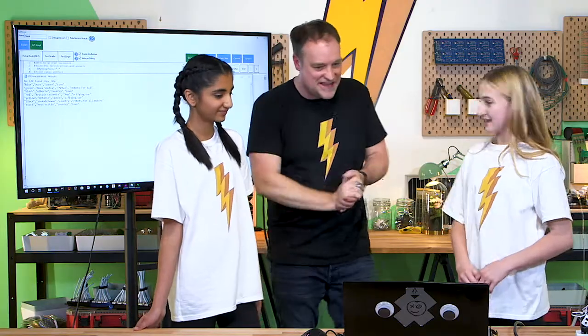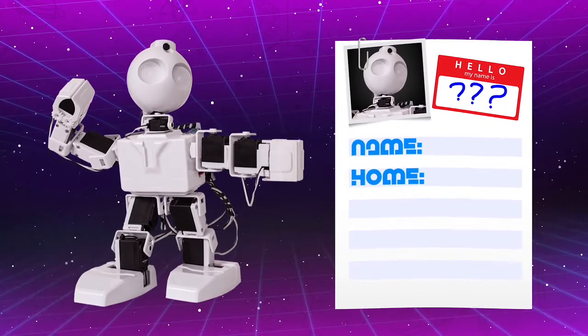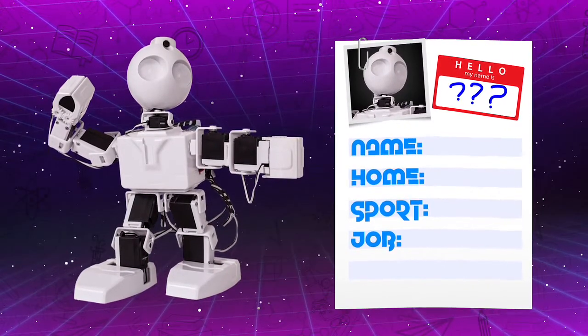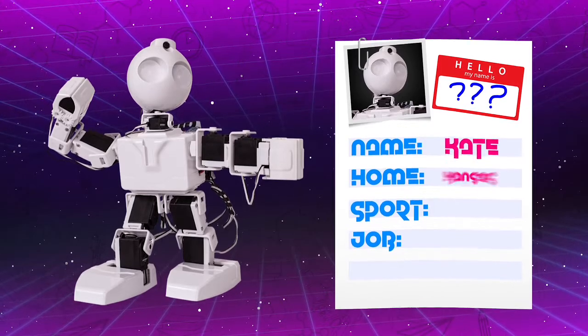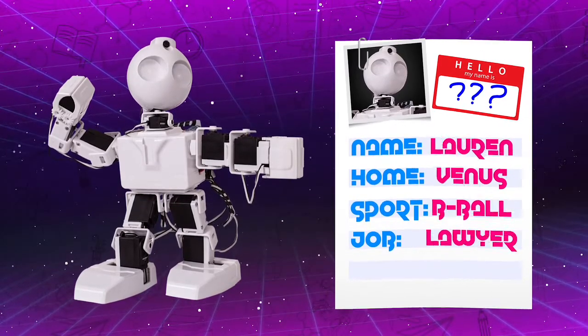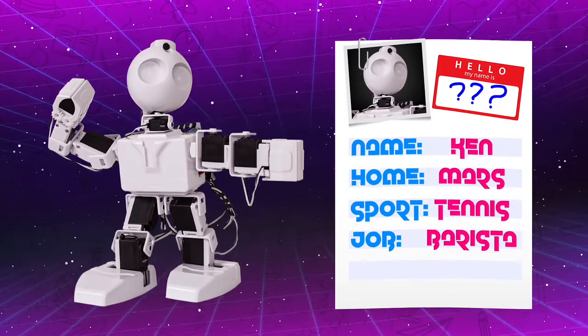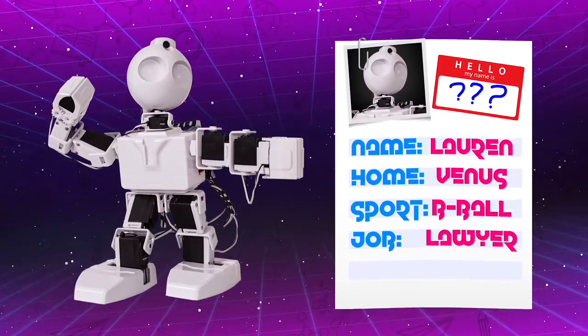So what kind of questions are we going to ask it? We're going to ask its name, where it's from, its favorite sport, and its occupation. We've provided multiple answers for each question and created characters for it to choose from. Then when we click execute, the robot will choose one of the personalities and introduce itself. So we've got all of our questions and all of our answers programmed — now we just have to find out what character the robot has chosen.